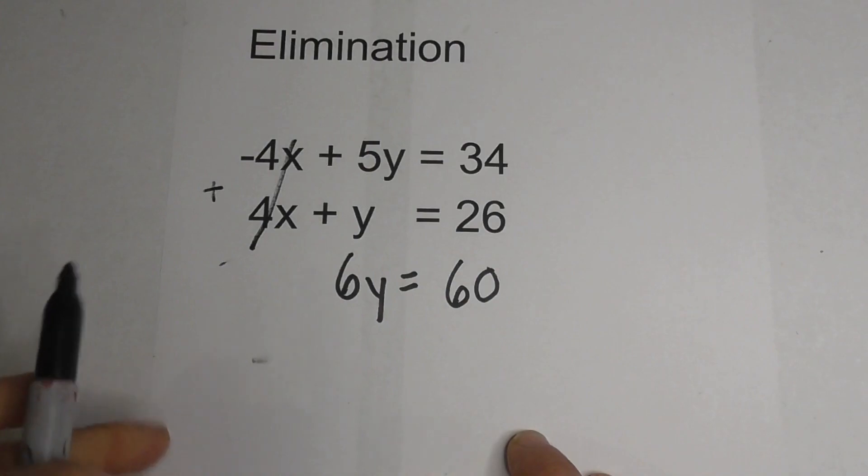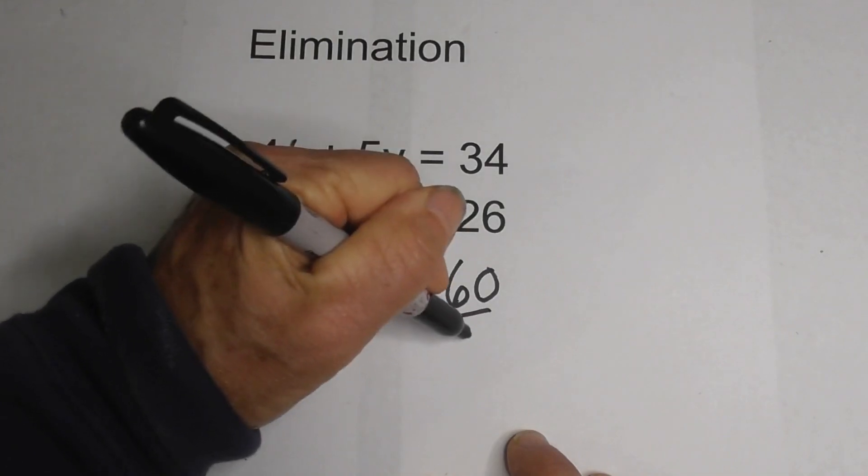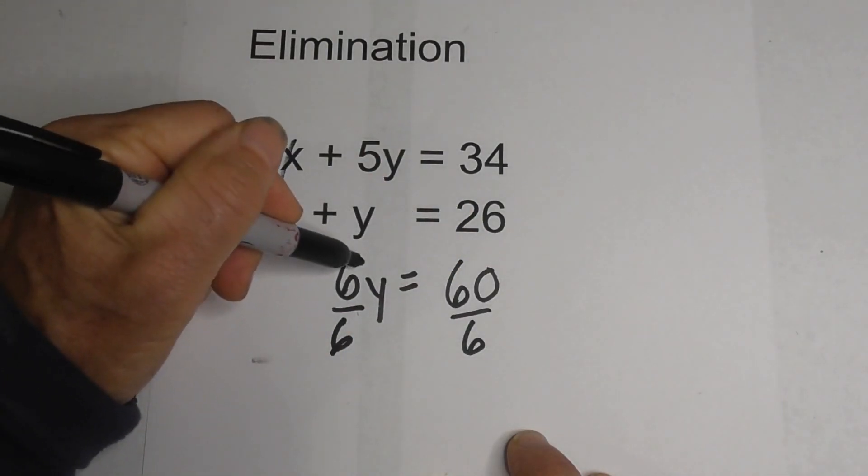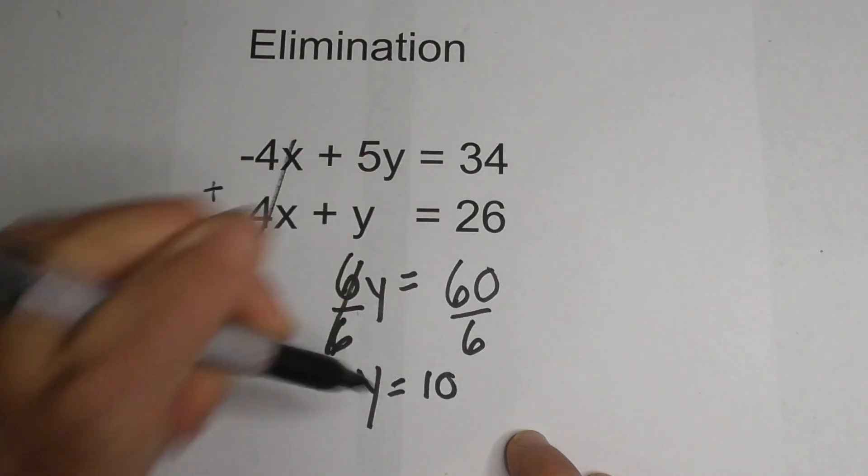Now we need to solve for y. So we can divide through, inverse operation of division. The 6 is cancelled and we have y equals 60 divided by 6 is 10.